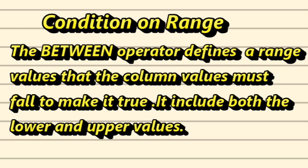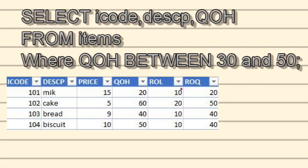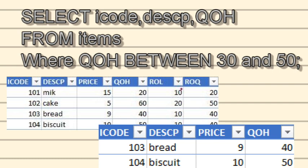This is the items table with columns icode, description, price, qoh, rol, and roq. I just want the qoh to be between 30 and 50. Once I execute the query, it shows results for icode, description, and qoh values from 30 to 50 — if a value is exactly 30 or 50, it is included. You can also write NOT BETWEEN, which reverses the result to values outside that range.